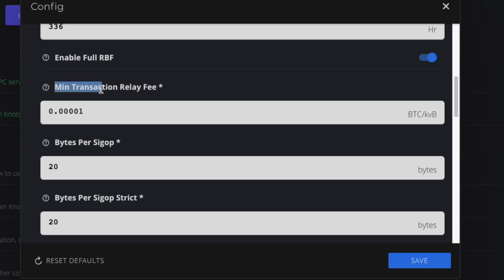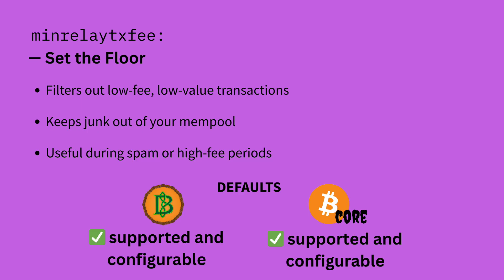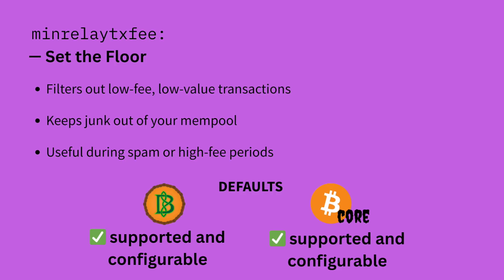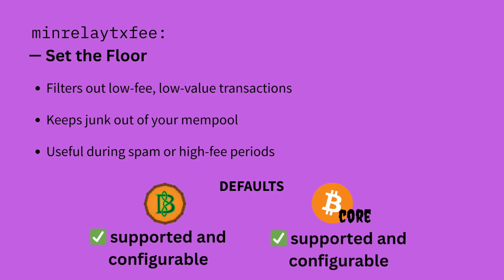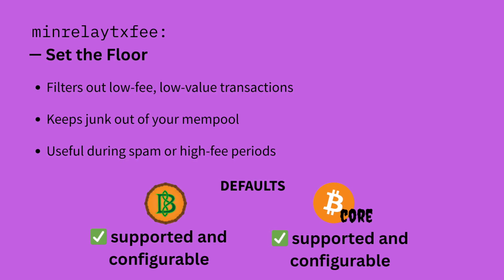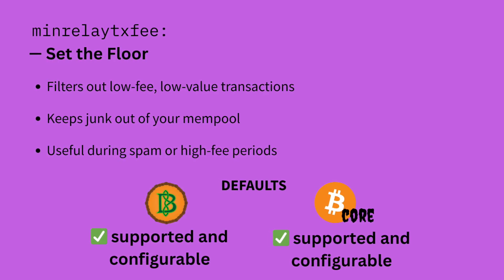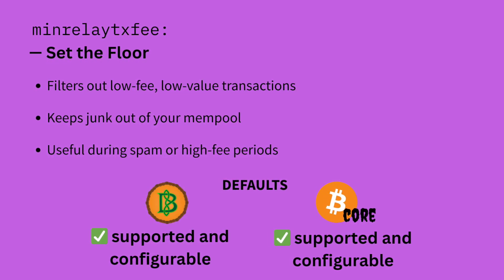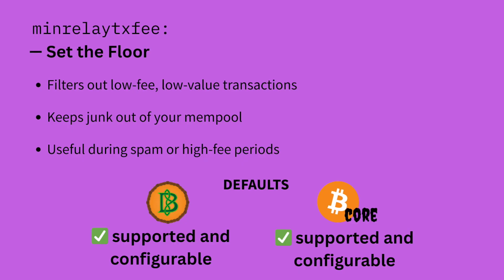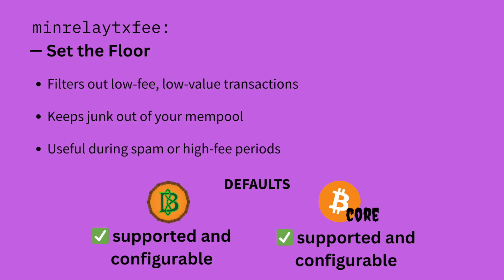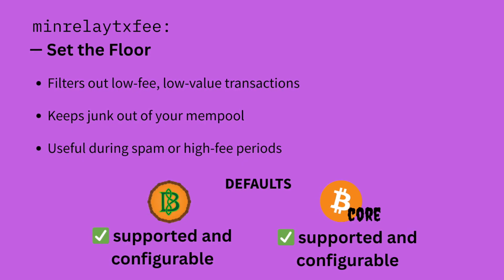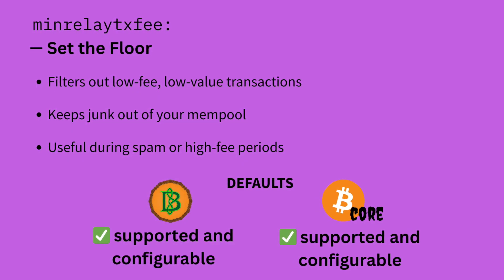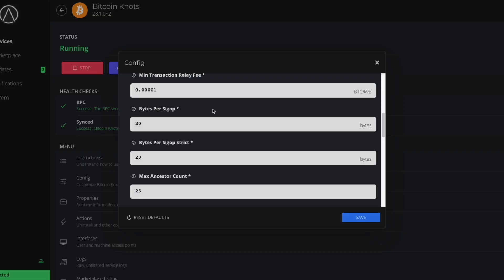Overall, full RBF gives users more flexibility and control when sending Bitcoin. The minimum transaction relay fee setting sets the lowest fee your node will accept to relay a transaction — it filters out low-value spam before it even hits your mempool. Both Bitcoin Core and Knots support this setting and you can adjust it in either one.